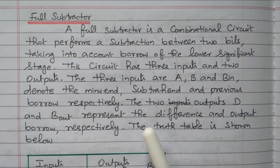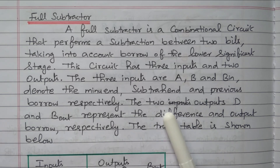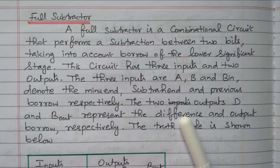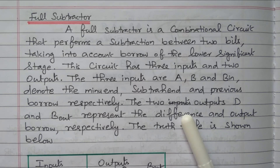The full subtractor performs subtraction of two bits taking into account Borrow-In, giving three inputs: A, B, and Borrow-In, and two outputs: difference and Borrow-Out. Practically, we need three inputs because while subtracting two bits the borrow is needed. With only two inputs that is done by the half subtractor, which is not practically sufficient. We can implement the difference using a full subtractor with three inputs: A, B, and Borrow-In.